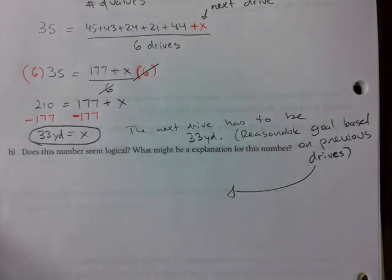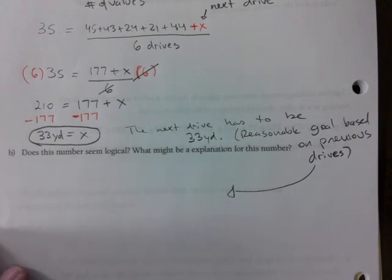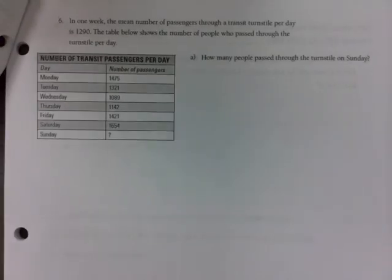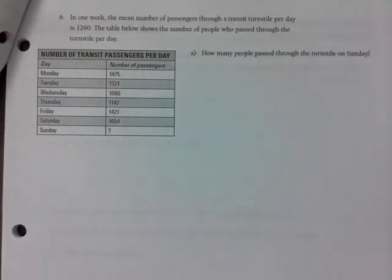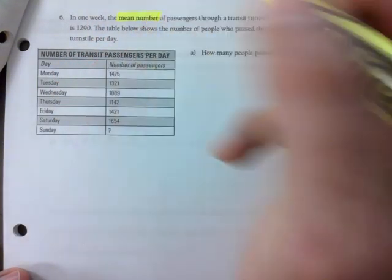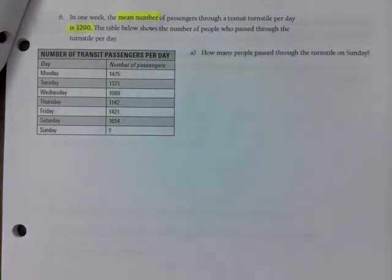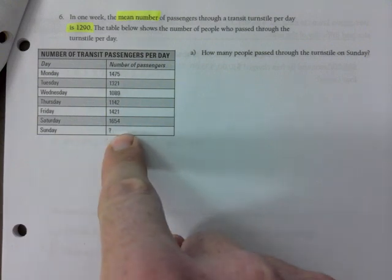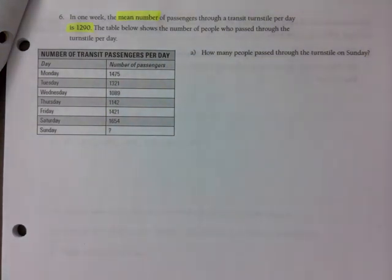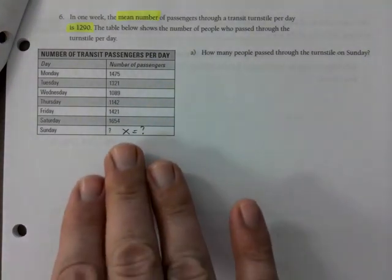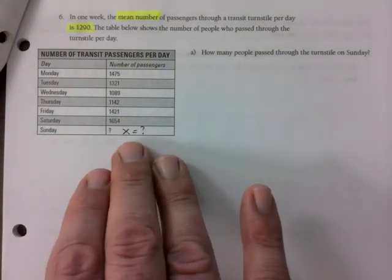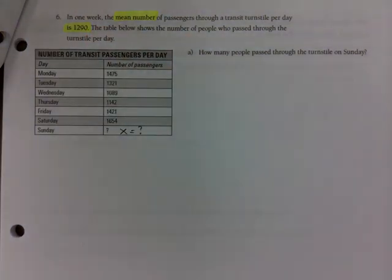So you go to 24. They give you the mean. They're giving you how many people are taking the transit, except for you don't know what Sunday is. So this is x, put a big x here. It's unknown. So I want you to use the same steps that I just took on the previous page and figure out what must the number of passengers be on Sunday to get that average of 1290. Give it a minute or two.